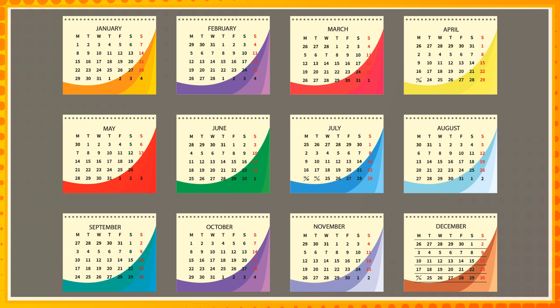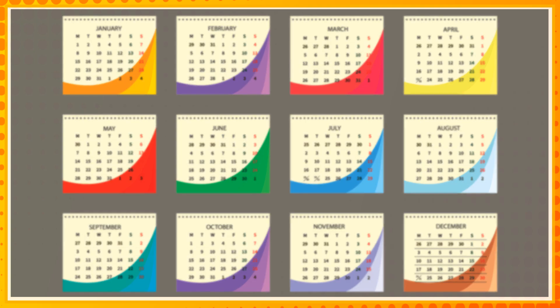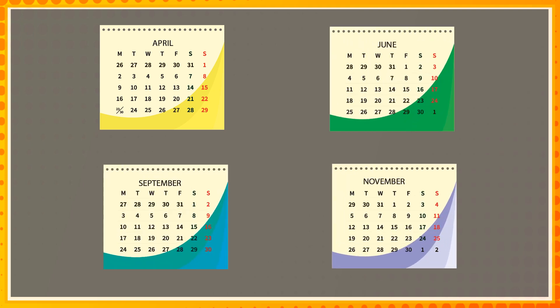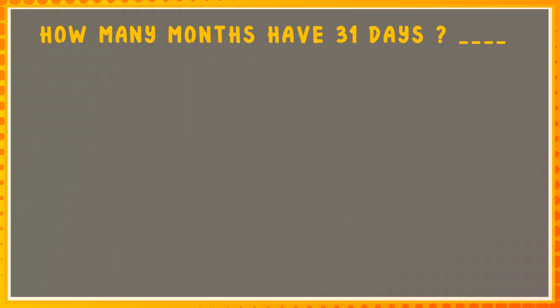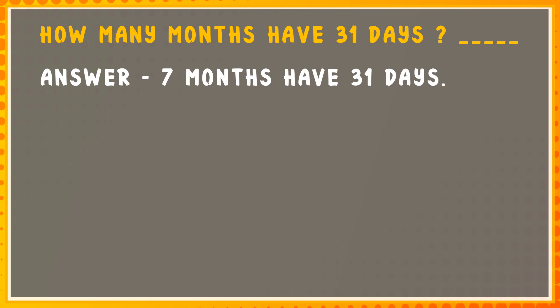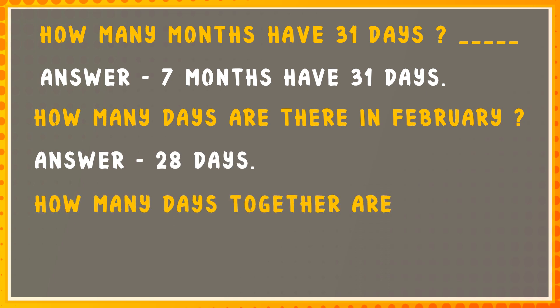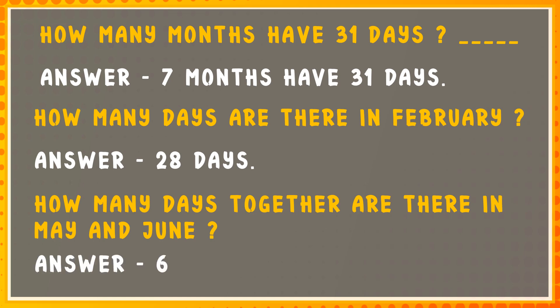Which months have 30 days? April, June, September and November. How many months have 31 days? 7 months have 31 days. How many days are there in February? 28. How many days together are there in May and June? 61 days.